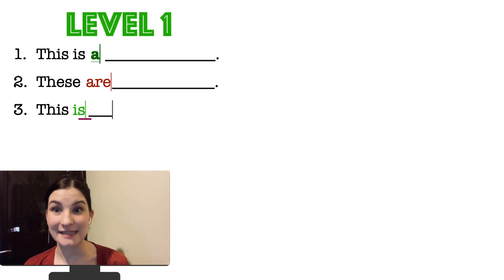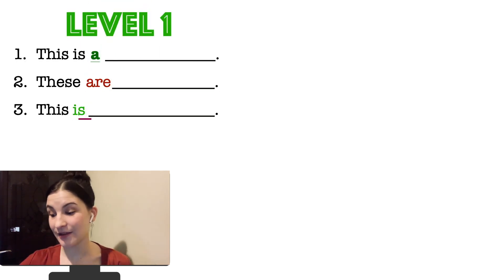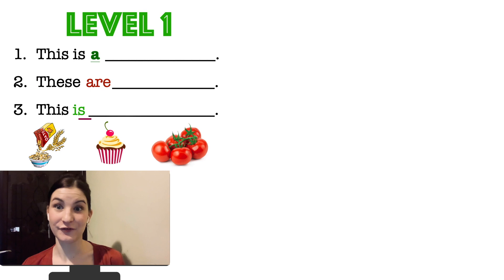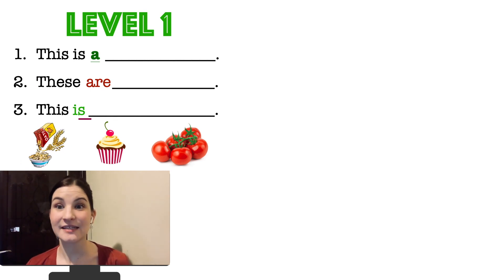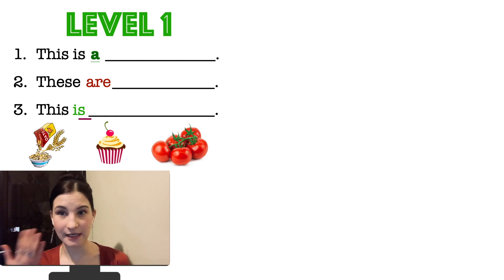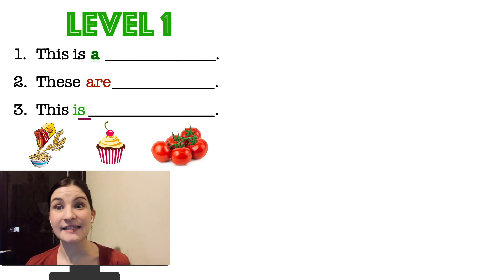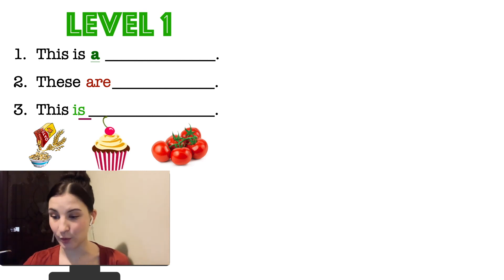We'll start with a game. This game has three levels. Level number one is the easiest because I will help you. You have three sentences and you can see three different pictures. What is this? This is cereal. Is it countable or uncountable? It's uncountable.